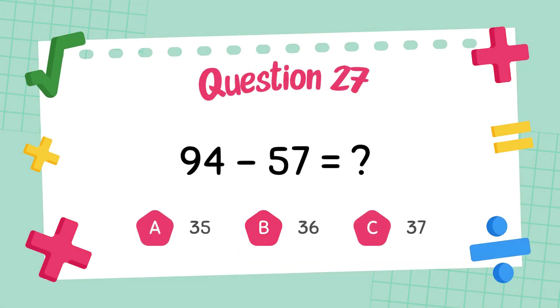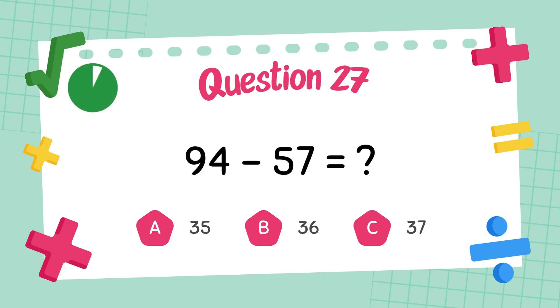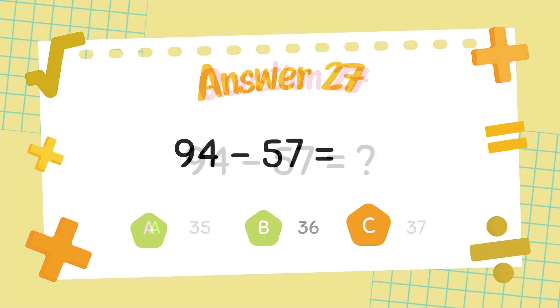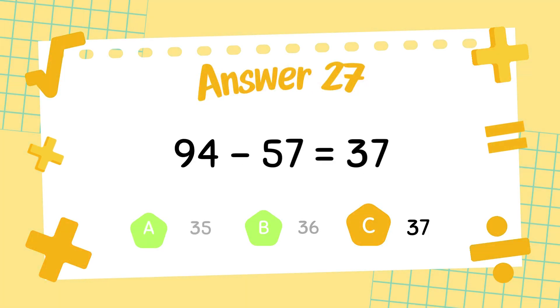What is ninety-four minus fifty-seven? The answer is thirty-seven.